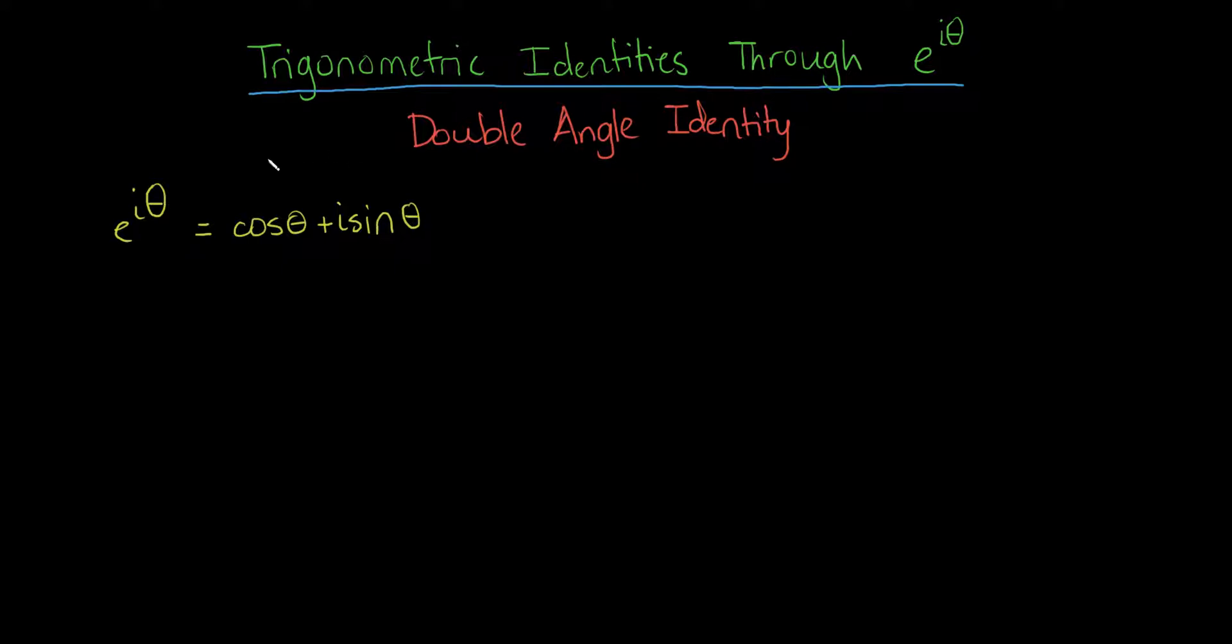This is also called Euler's equation, and a very well-known specific case of this is e to the i pi. In this case, cosine of pi is negative 1, and the sine is 0, so this doesn't matter. We have e to the i pi is negative 1.